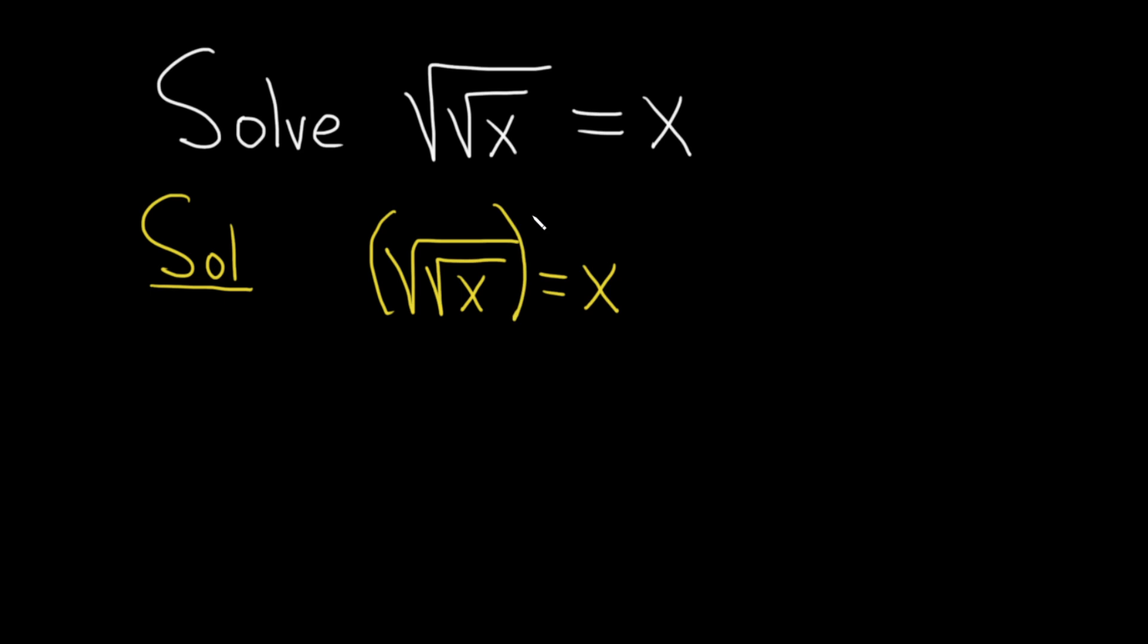So I will square it here and we'll square it here. When you square the left hand side one of the square roots goes away. So we just get the square root of x and that's equal to x squared.